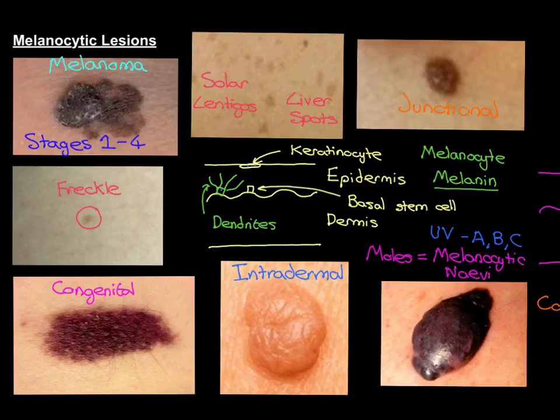If you have stage 3 melanoma, where the melanoma has spread to the lymph nodes and you've got lymph node metastases, then the treatment is going to be to remove the primary tumour and also remove the regional lymph nodes to which it has spread. So it's surgical treatment for stages 1, 2, and 3.